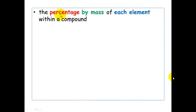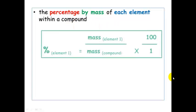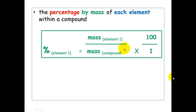Percentage composition works out the percentage by mass of each element within a compound, and it can be worked out just as you work out any other percentage. You take the mass of the element that you're looking at, divide it by the total mass of the compound, and multiply it by 100.